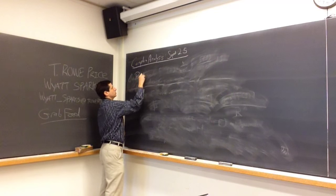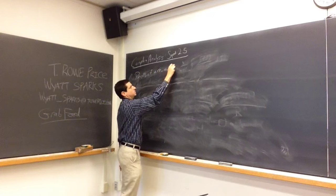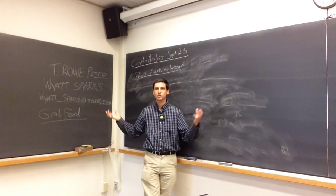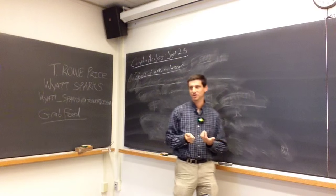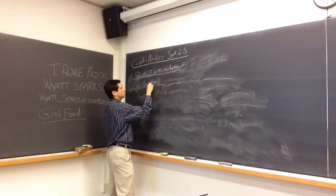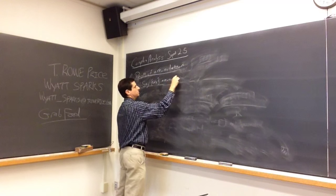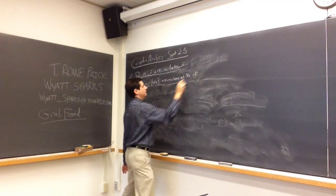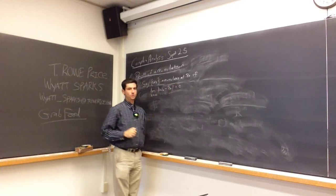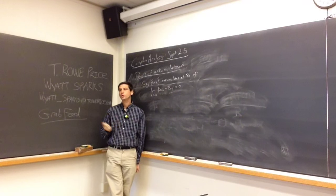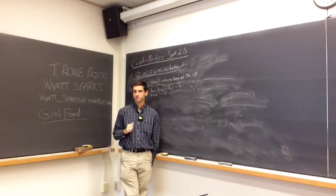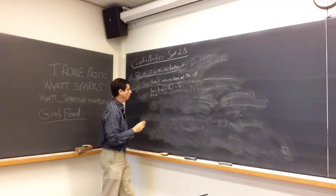I want to talk about points of accumulation. Every now and then in mathematics, we name things well. Points of accumulation is going to be a sequence of points that accumulates — gets closer and closer to a common value. We say the sequence w_k accumulates at z_0 if the limit as k goes to infinity of |w_k - z_0| equals 0. So the points are all getting closer and closer to z_0 — maybe we're spiraling in, something like that.